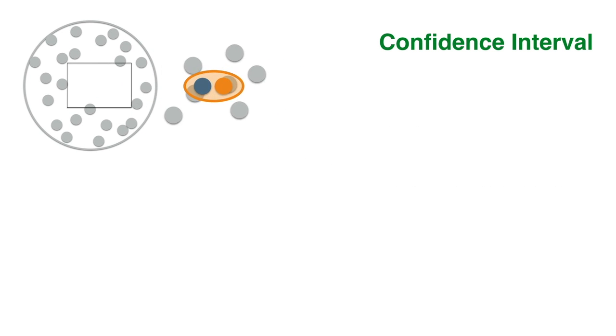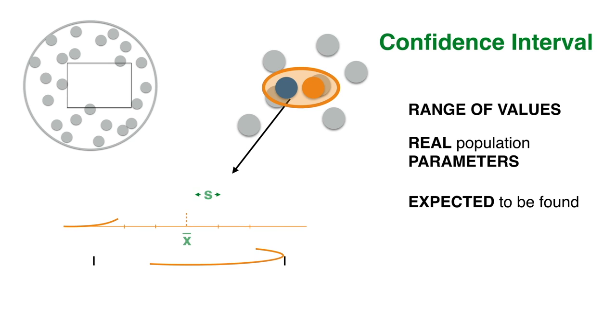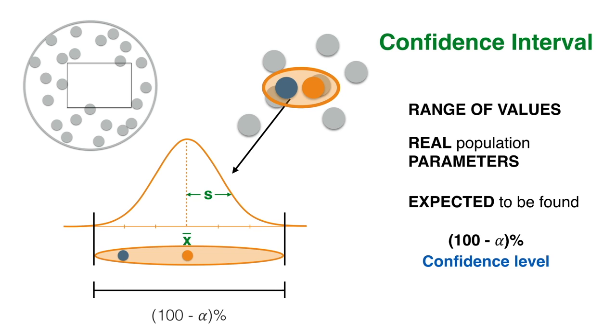This interval offers a range of values within which the real population parameter is expected to be found. This interval is said to have a 100 minus alpha percent confidence level, so the user can asseverate that they are 100 minus alpha percent confident of this interval containing the real unknown value of the population mean.